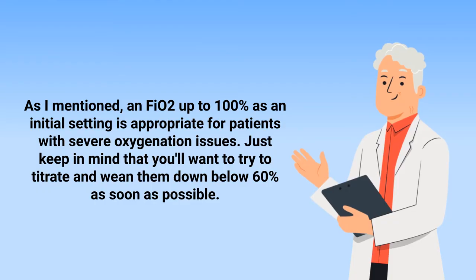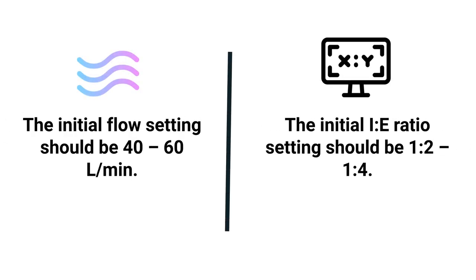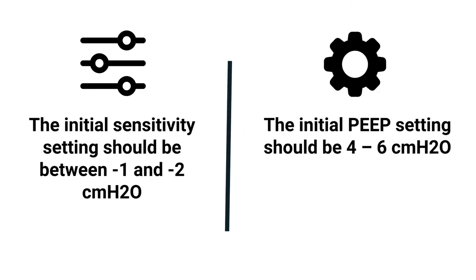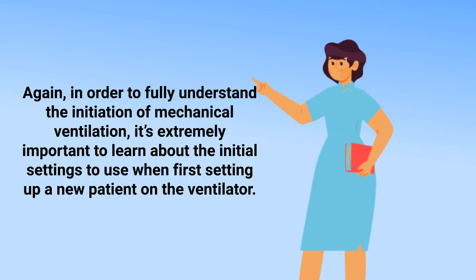An FiO2 up to 100% as an initial setting is appropriate for patients with severe oxygenation issues; just keep in mind that you'll want to titrate and wean them down below 60% as soon as possible. Next, the initial flow rate setting should be 40 to 60 liters per minute. The initial I:E ratio setting should be 1:2 to 1:4. The initial sensitivity setting should be between negative 1 and negative 2 centimeters of water pressure. Finally, the initial PEEP setting should be 4 to 6 centimeters of water pressure.